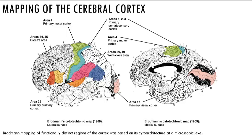Looking at the motor areas of the cerebral cortex, the primary motor cortex is located within the precentral gyrus of the frontal lobe. This area possesses large neurons called pyramidal cells and allows conscious control of skilled voluntary movements of skeletal muscles. The pre-motor cortex is located anterior to the precentral gyrus and controls learned motor skills that are repeated or patterned — for example, when you learn to play an instrument or perform skilled sports.